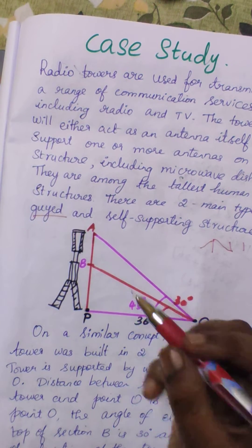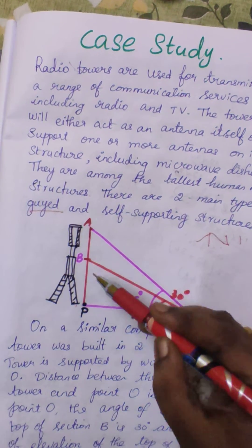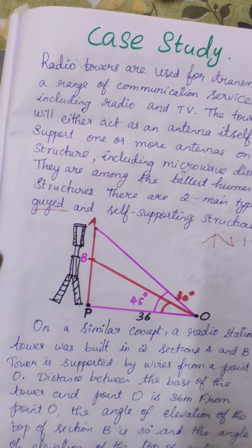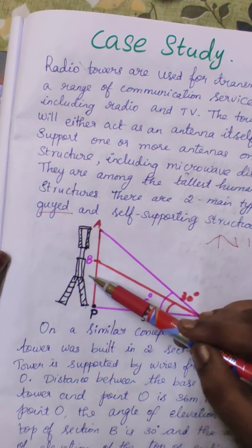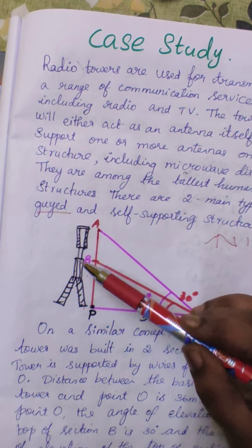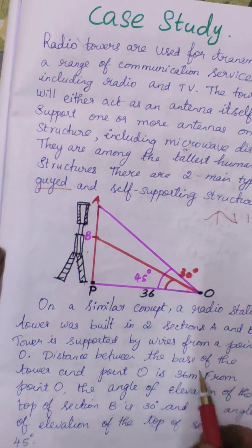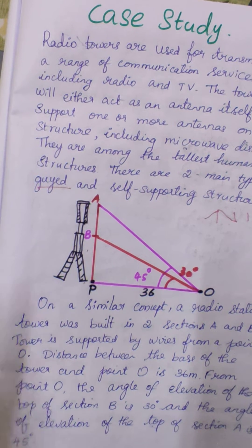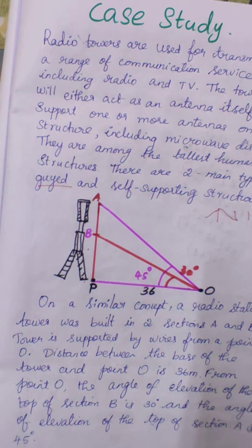On a similar concept, a radio station tower was built in two sections, A and B. The two sections are supported from a point O. At that particular point on the ground, guide wires connect — OA is one guide wire and OB is another guide wire supporting the tower. The distance between the base of the tower is given, and for mathematical convenience we assume the tower is a straight line.